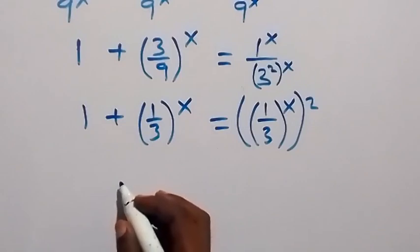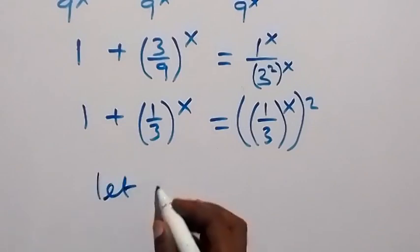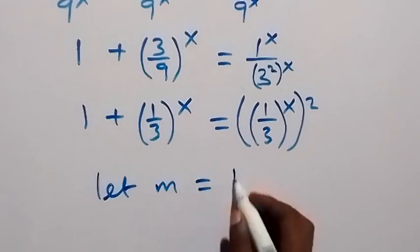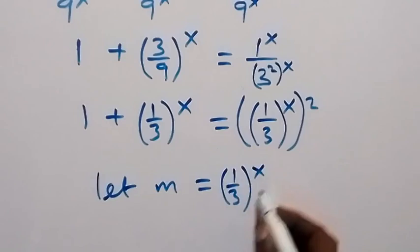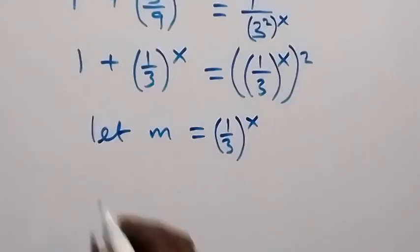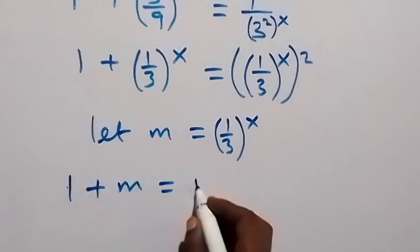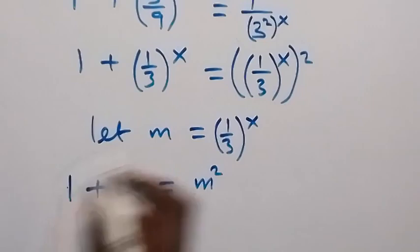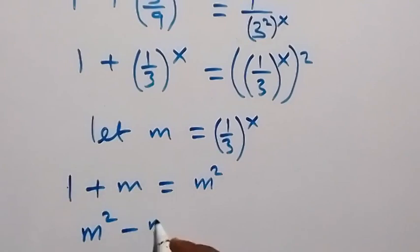The power of 2 affects both numerator and denominator: 1 squared is 1 and 3 squared is 3². So in the next step, we have 1 plus (1/3)^x equals (1/3)^(2x). Let m equal (1/3)^x. The equation becomes 1 plus m equals m squared, or rearranging: m² minus m minus 1 equals 0.